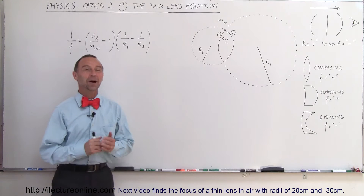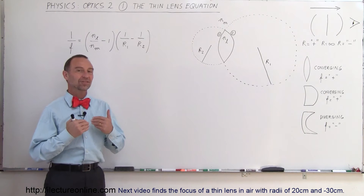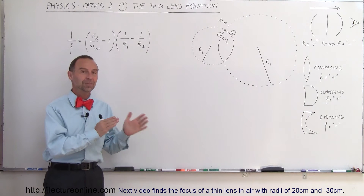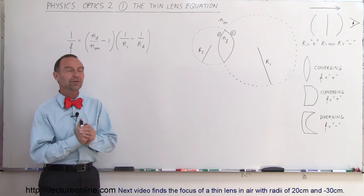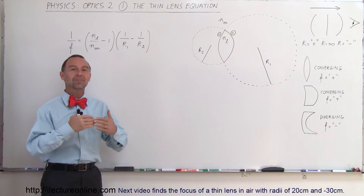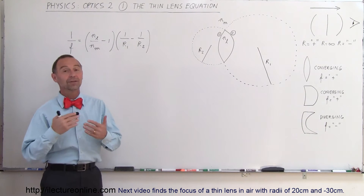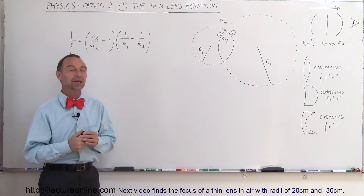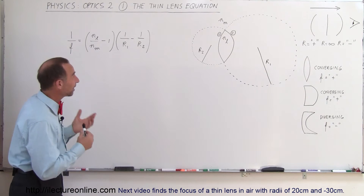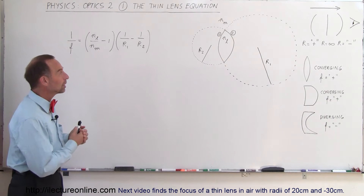Welcome to ElectronLine. We're going to start a new series on optics. This series will be a little bit more advanced than the previous optics set. We'll start with some basic concepts and work our way through the development of how many of the equations were derived in optics. We're starting with what we call the thin lens equation — we're just going to introduce you to the equation.